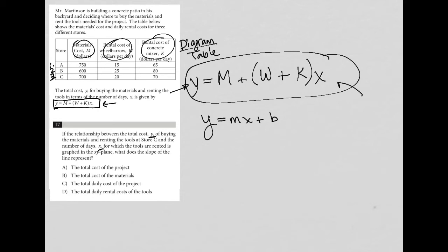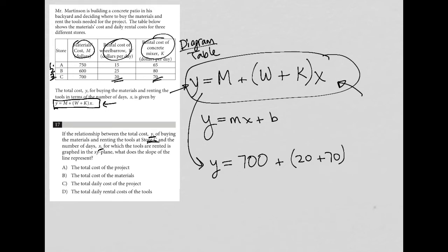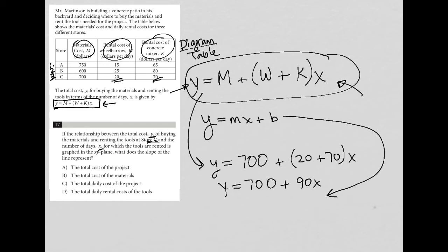I'm going to rearrange what I was provided with. That capital M is a constant, and we're talking about store C, so that number is 700. My W for store C is 20, and my K for store C is 70 — so 20 plus 70. This turns into Y equals 700 plus 90X. Rearranging into slope-intercept form: Y equals 90X plus 700, where 700 is the B value or Y-intercept, and 90 is the M value or the slope.